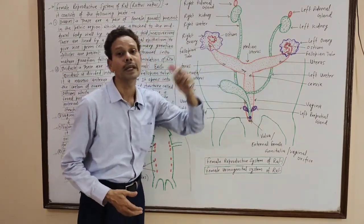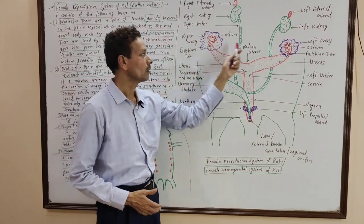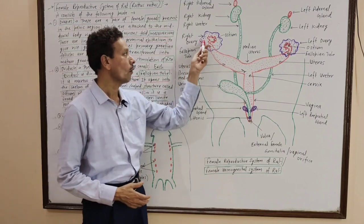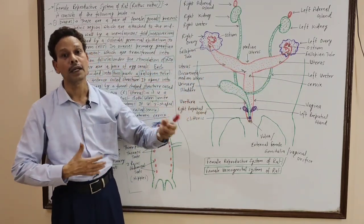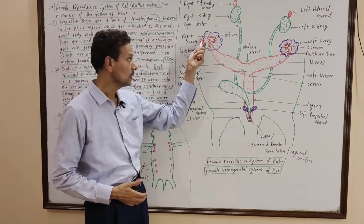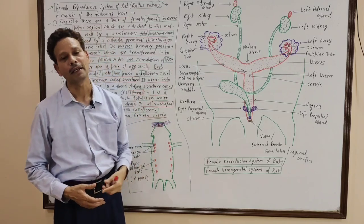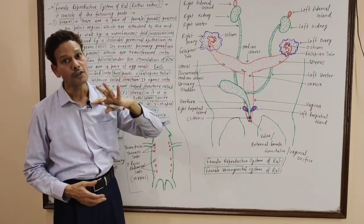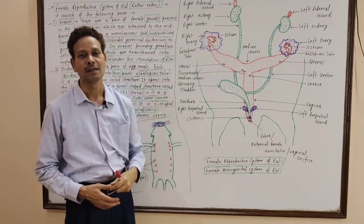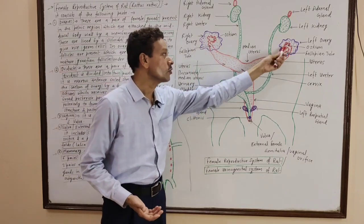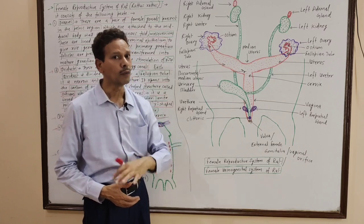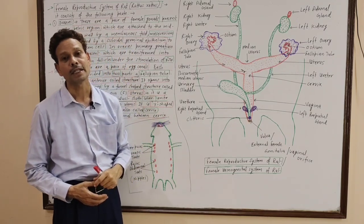A pair of ovaries. These are irregular-shaped, a pair of female gonads. The ovaries are present in the lower abdominal part, in the lumbar and pelvic region of the abdomen. These ovaries are lined by cuboidal germinal epithelium, and that membrane gives rise to germ cells. In each ovary, undeveloped primary follicles are present.